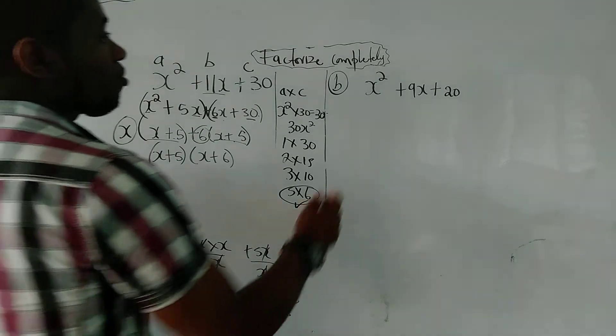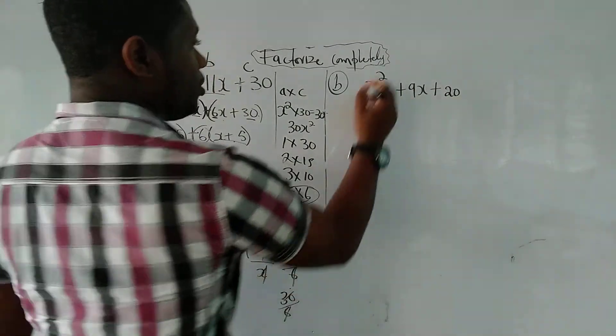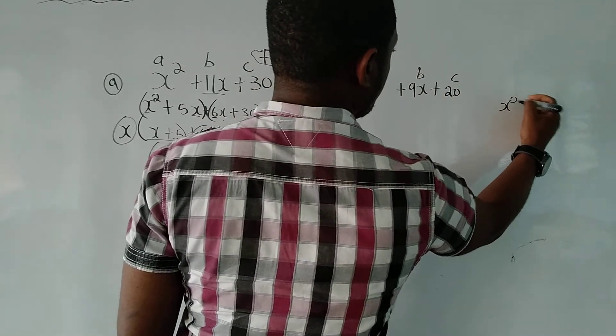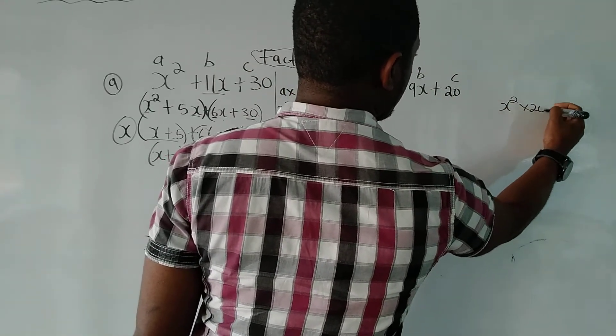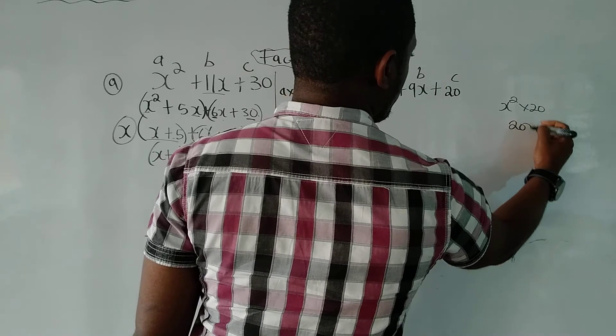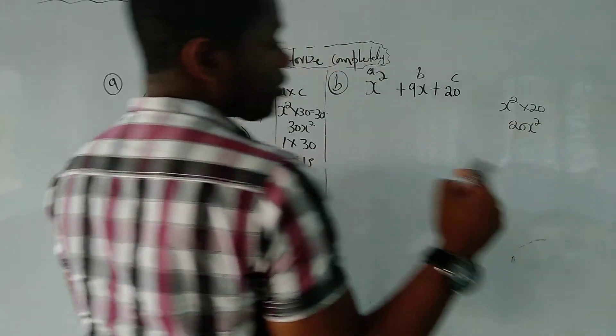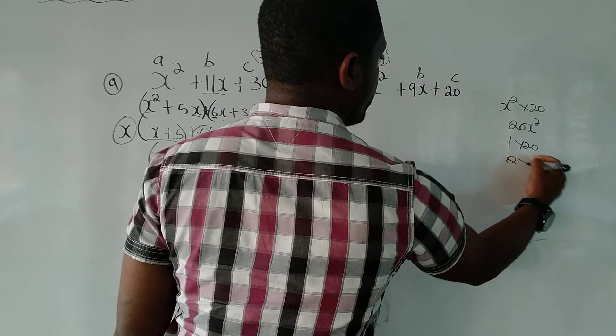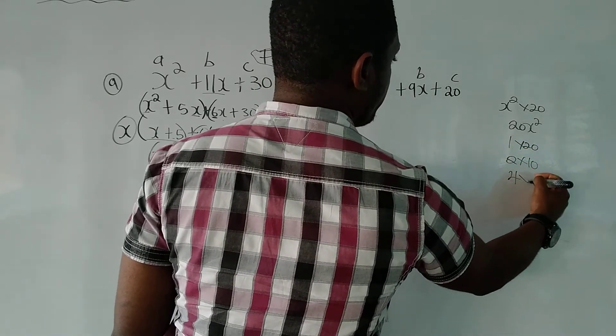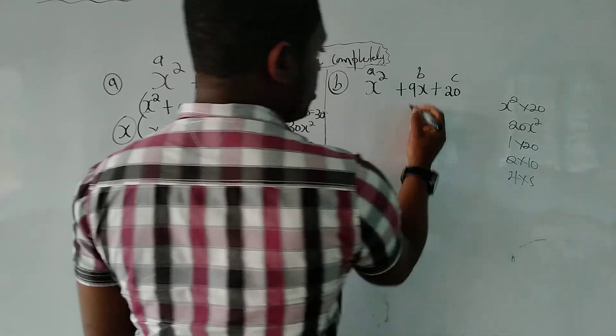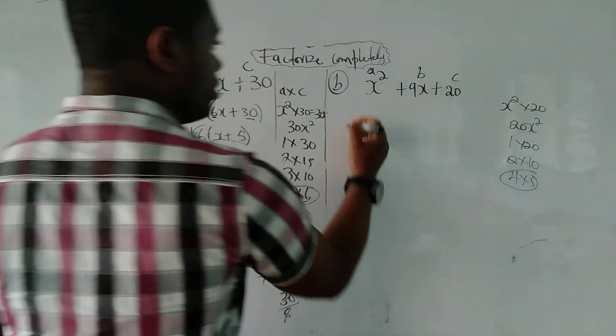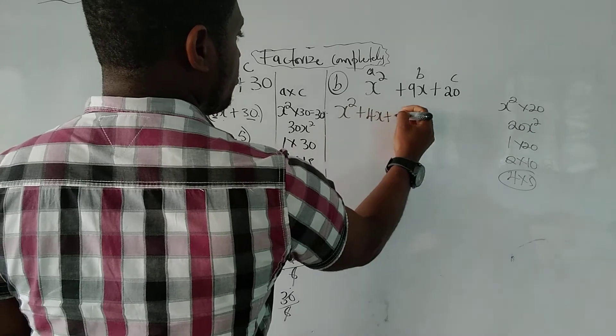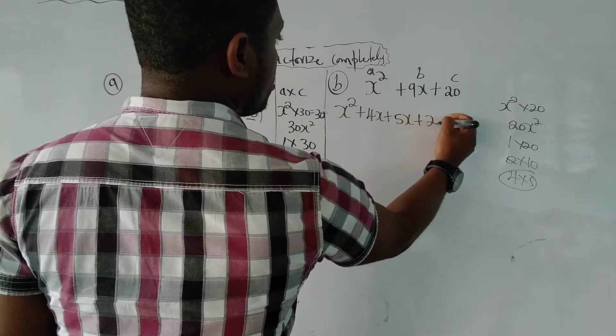All right, let's just look at this one. x squared plus 9x plus 20. So we'll label it a, b, c again. By now, you guys have paused the video and tried it for yourself. So this gives us 20x squared. This is all the factors of 20. So that's 1 times 20, 2 times 10, 4 times 5. Clearly, we can see it's 4 and 5 give us 9. So we'll replace 9x with 4x plus 5x, right?